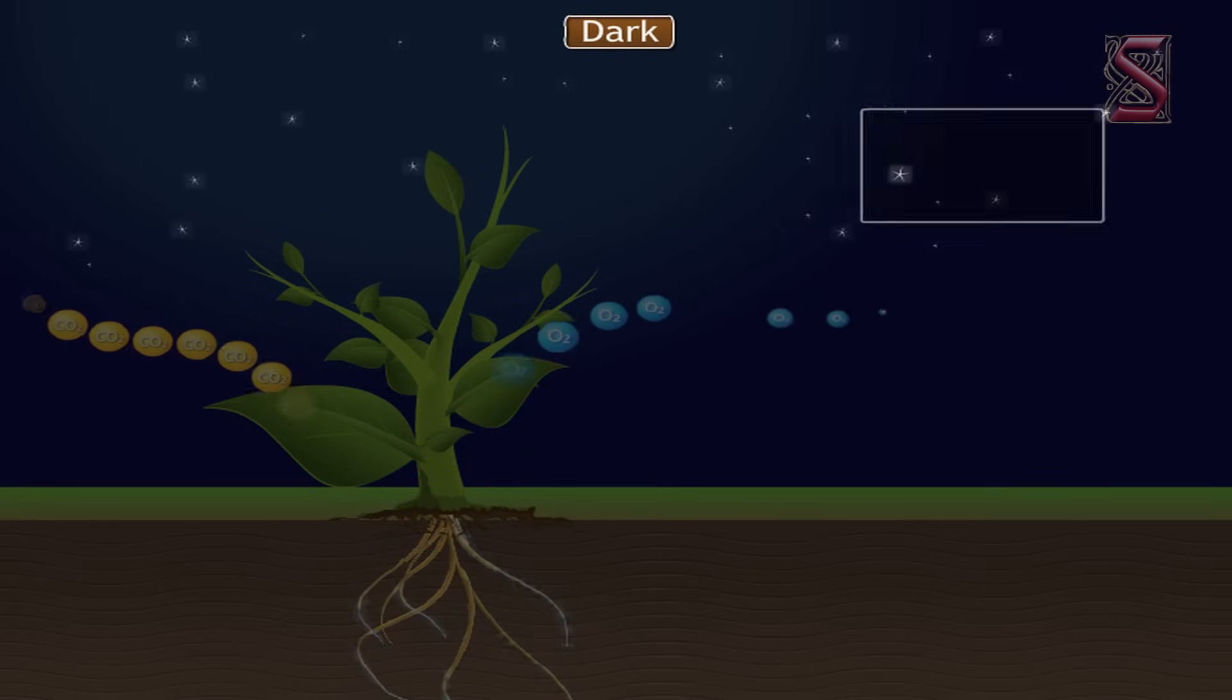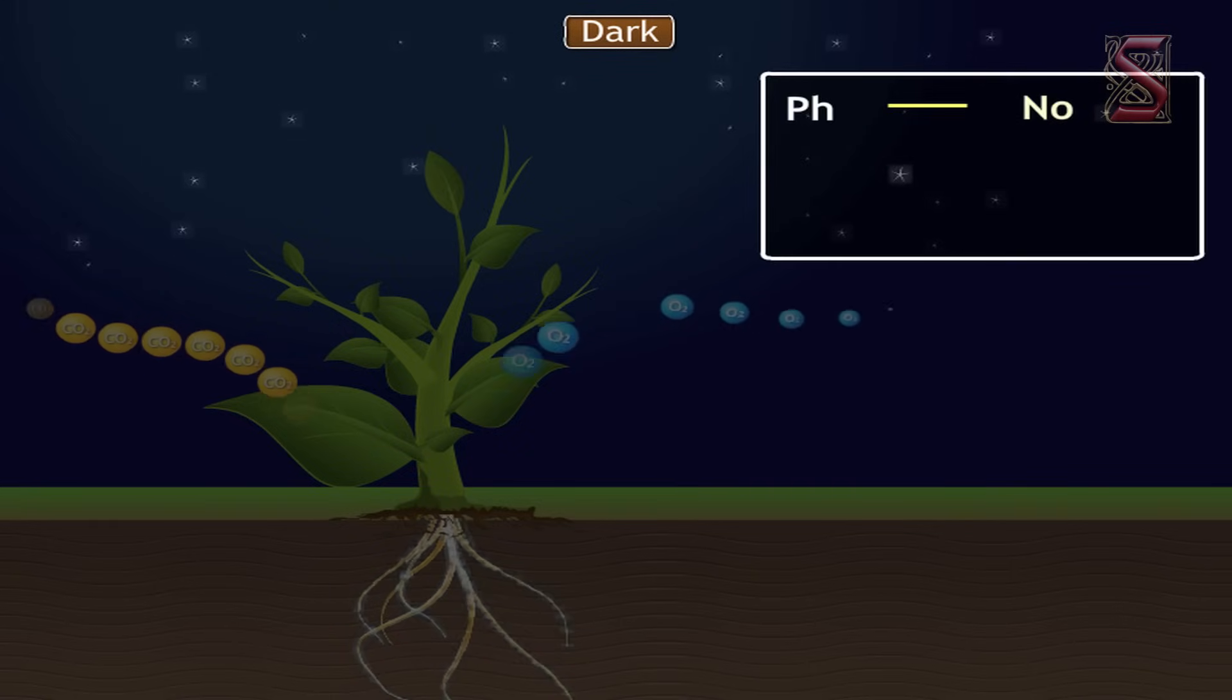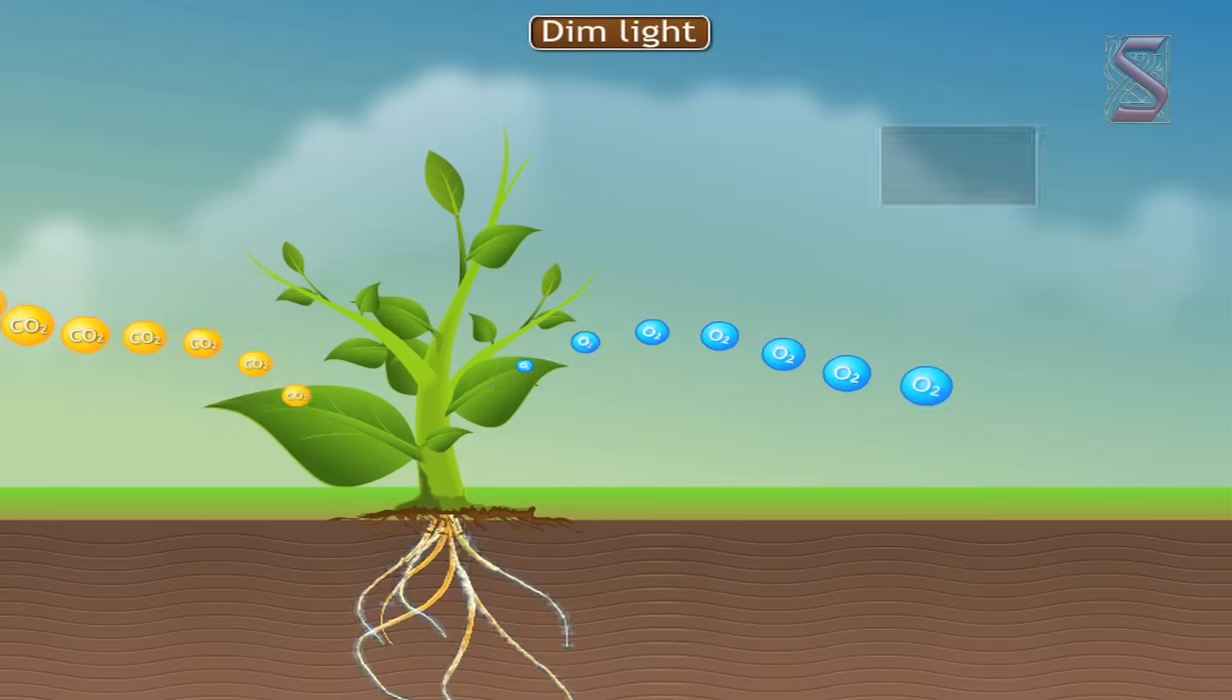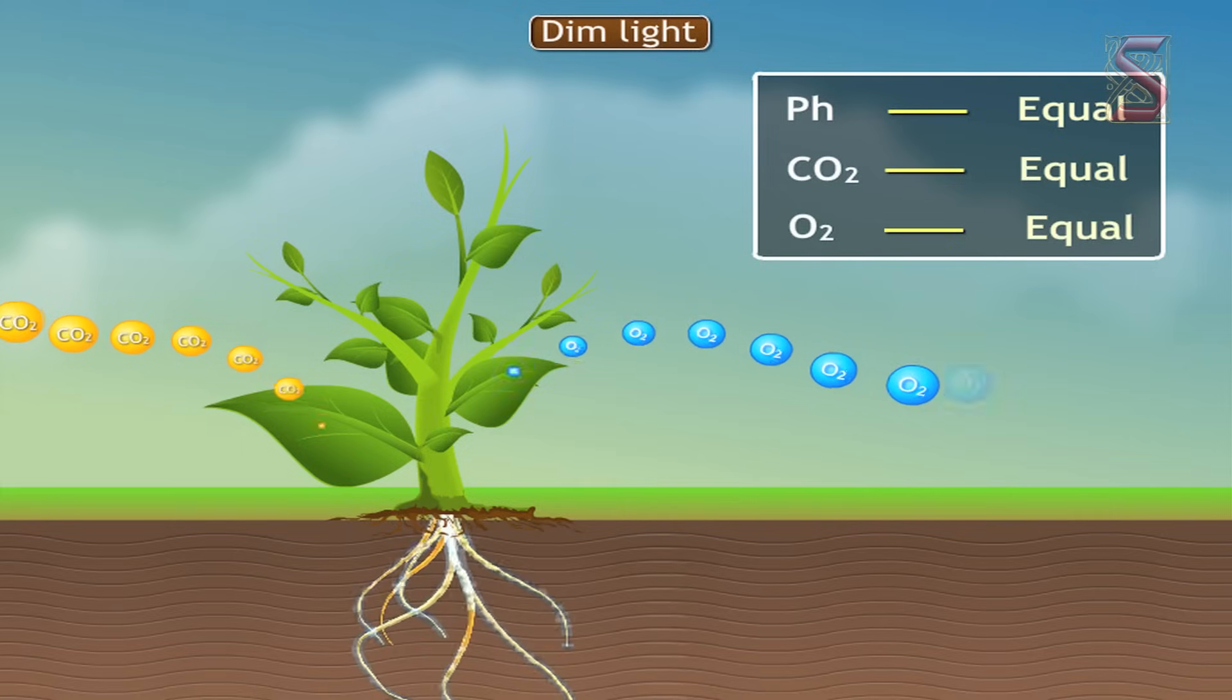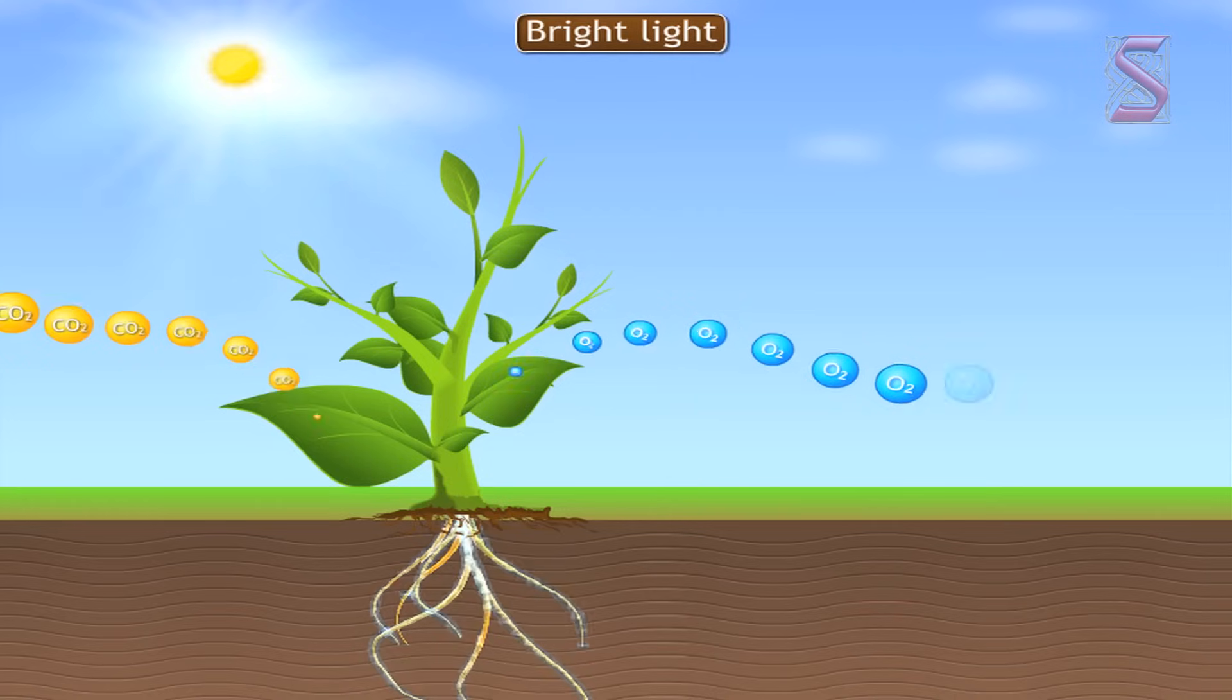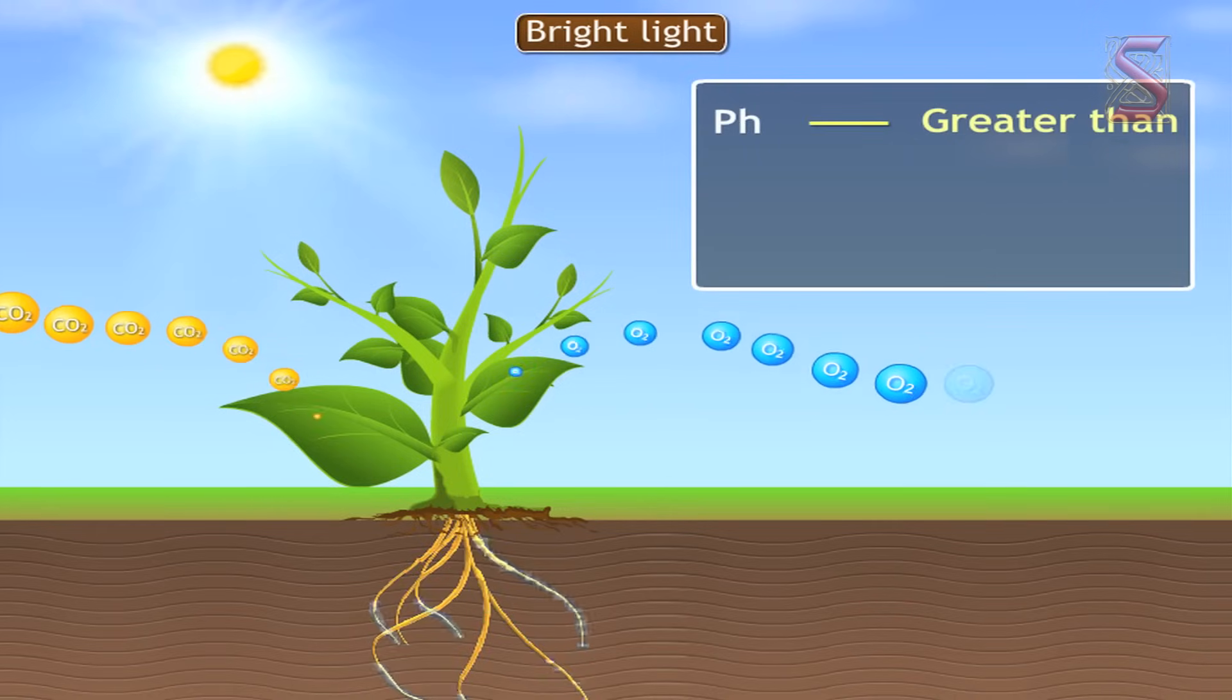Conditions: photosynthesis versus respiration, overall result. Dark: respiration, no photosynthesis, oxygen taken in, carbon dioxide given out. Dim light: photosynthesis rate equals respiration rate, neither gas is taken in nor given out as each cancels the other out. Bright light: photosynthesis rate greater than respiration rate, carbon dioxide taken in, oxygen given out.